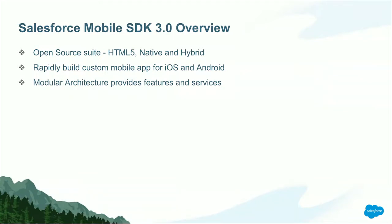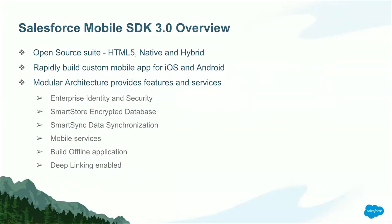The mobile SDK comes with a modular architecture and provides certain features and services. One is enterprise identity and security — it supports SAML and any advanced authentication flows, so administrators have full access and control over who gets to see what data. The Smart Store encrypted database enables you to store or retrieve data locally. Smart Sync data synchronization gives you the API to synchronize data from offline database to Salesforce. It also comes with mobile services like geolocation, push notification, analytics, and collaboration. Deep linking is a key feature we used for this client because they were struggling with this issue — deep linking allows you to move from one application to another application, which we'll see in the demo.